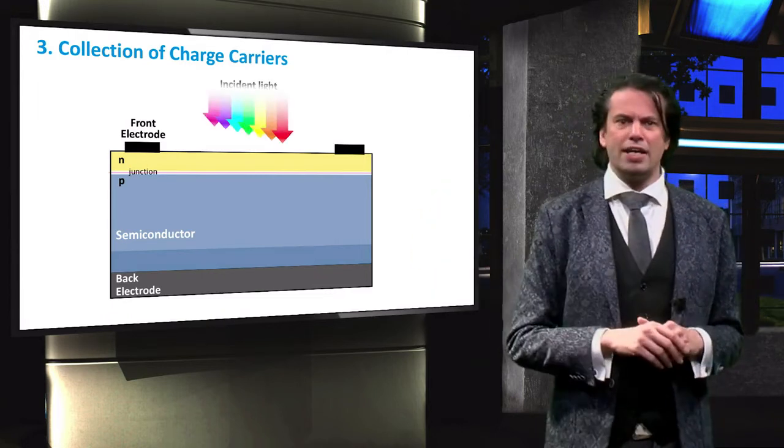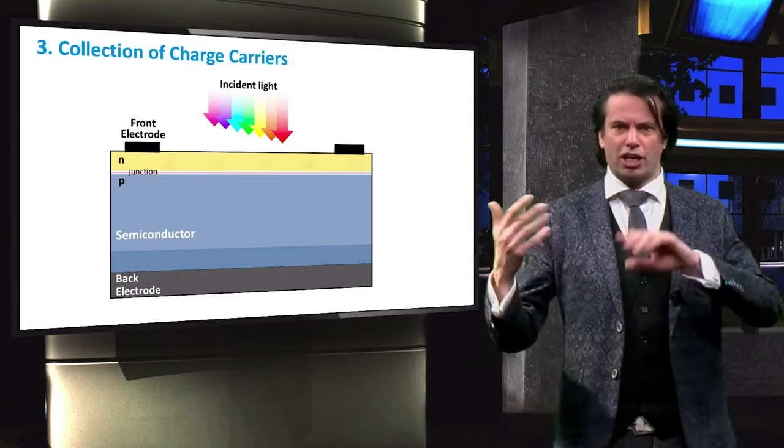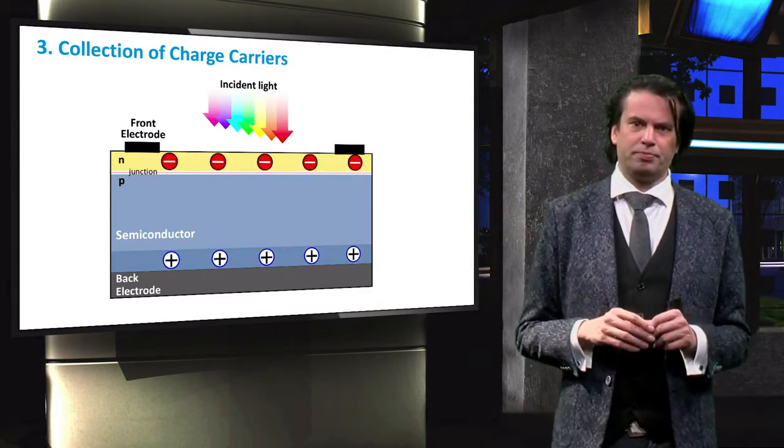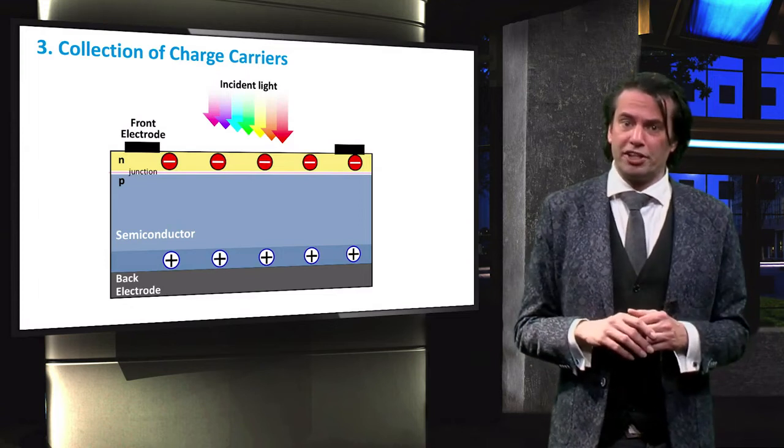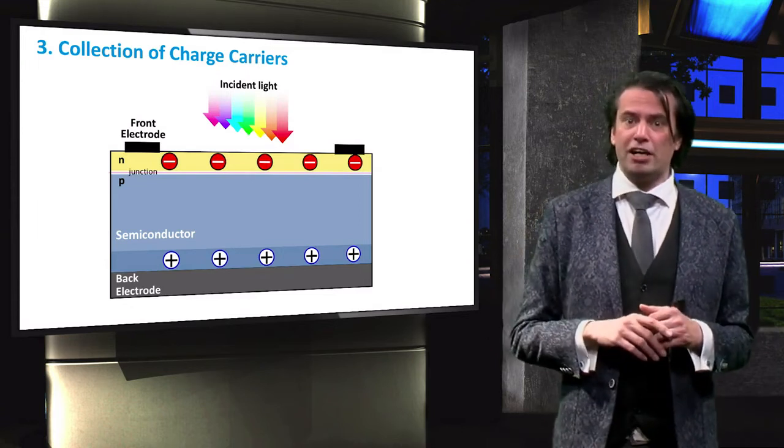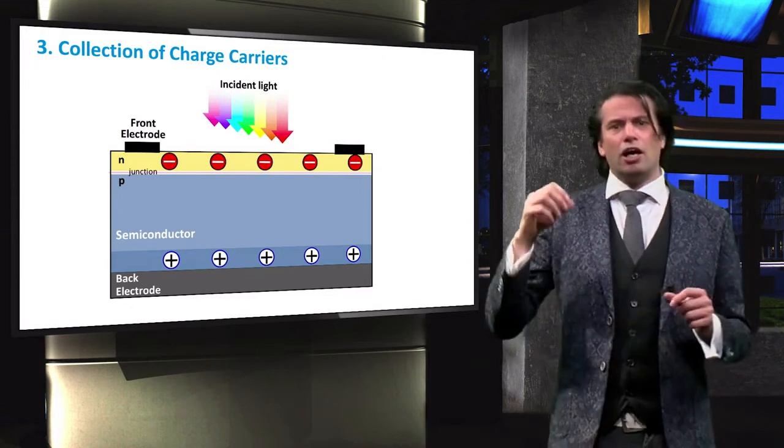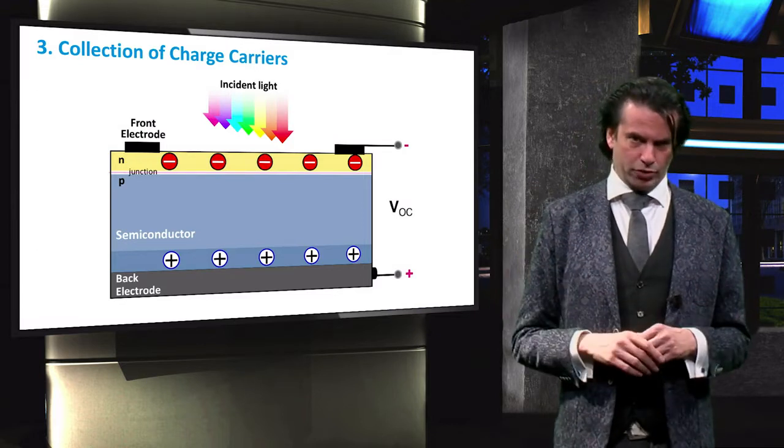On the influence of light, a large number of charge carriers are generated and separated. The difference in charge carrier concentration at both ends of the PV device causes a potential difference between the electrodes.